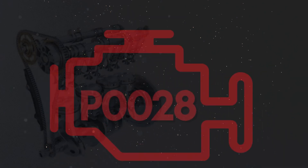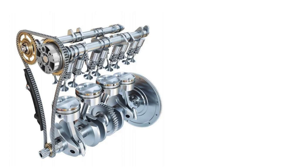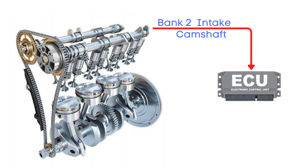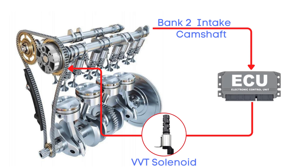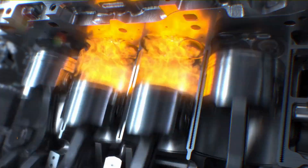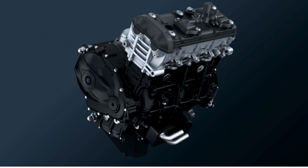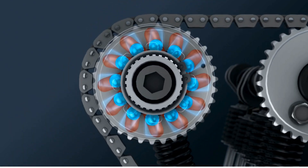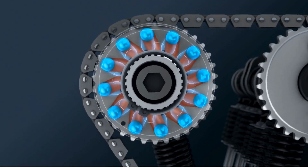Now let's learn why P0028 was triggered. Your engine's camshaft position sensor is constantly measuring the position of the camshaft and sending that data straight to the ECU, which uses it to control the variable valve timing, or VVT, solenoid. Depending on the engine load and speed, the ECU sends pulse commands to the VVT solenoid to either advance or delay the camshaft's position. The VVT solenoid then makes the necessary adjustments to the cam phaser, ensuring your engine is performing efficiently and smoothly.